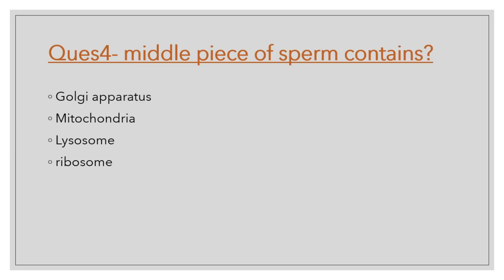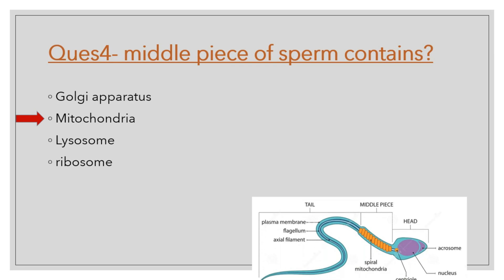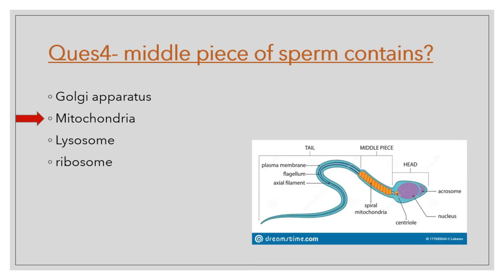Question number 4: The middle piece of the sperm contains Golgi apparatus, mitochondria, lysosomes, or ribosomes? The middle piece contains the mitochondria. As seen in the picture, the head portion contains the acrosome, nucleus, and centriole, while the middle part contains spiral mitochondria. The tail region contains the plasma membrane, flagellum, and axial filament. Many questions can be solved by knowing what is in the head, middle piece, and tail.